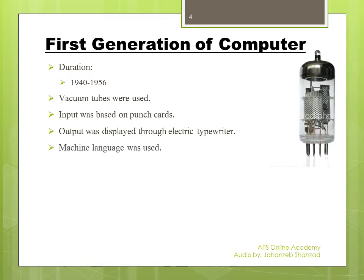Machine language was used in first generation computers. Machine language means 0s and 1s, and it is the only language directly understandable by the computer. It is very difficult for humans to understand and interpret.